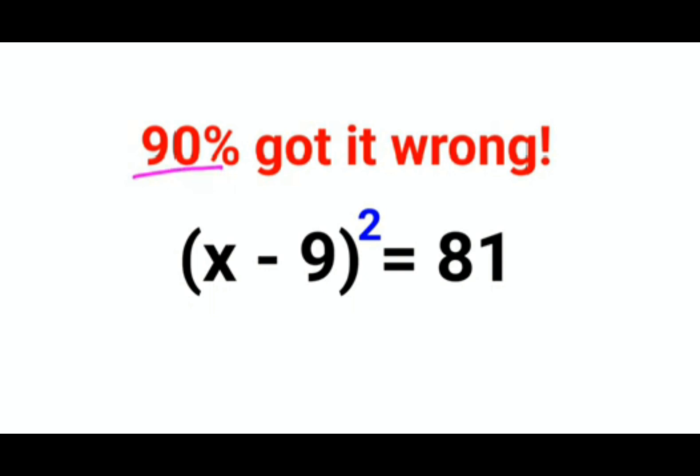Okay, so here we have (x - 9)² = 81. So now the first thing what we should do is we will take square roots on both the sides. When I do square roots, this square and the root cancels, right, and here this comes out to be 9.